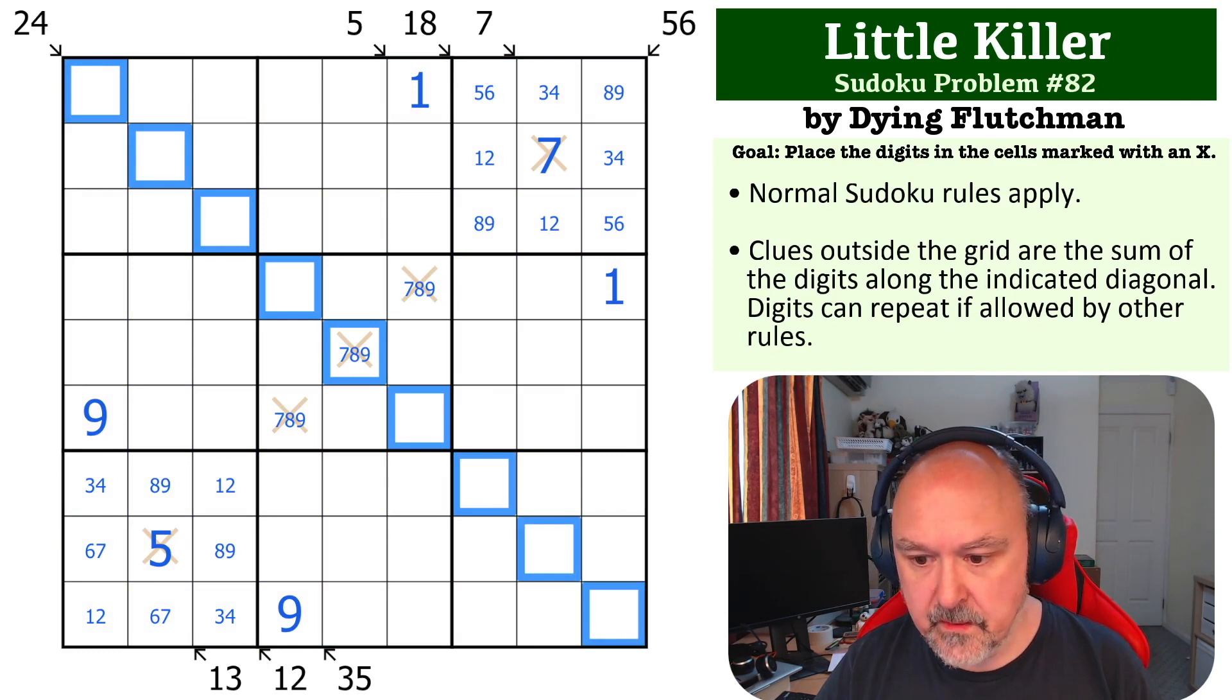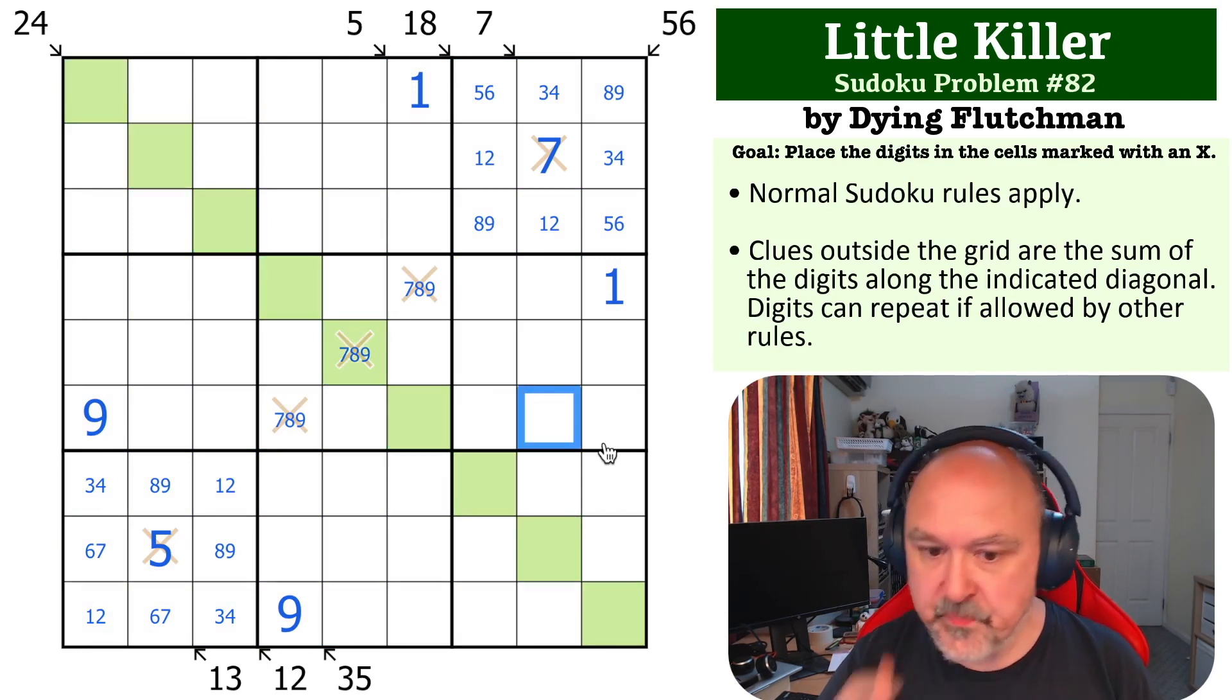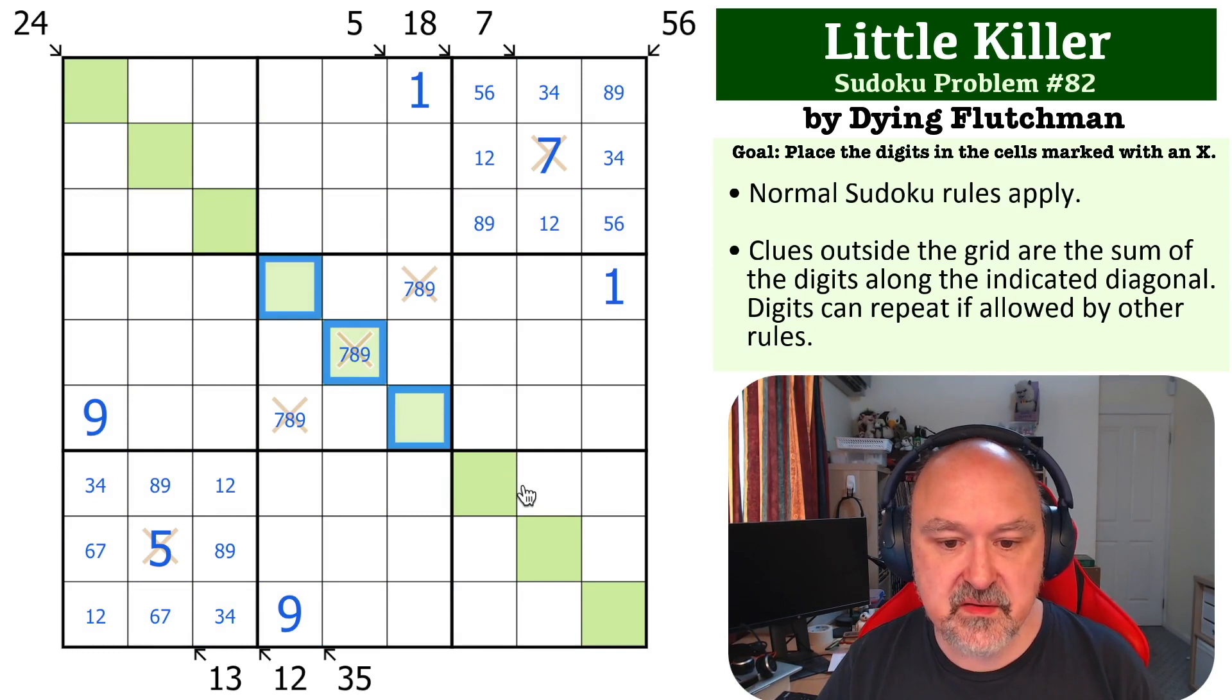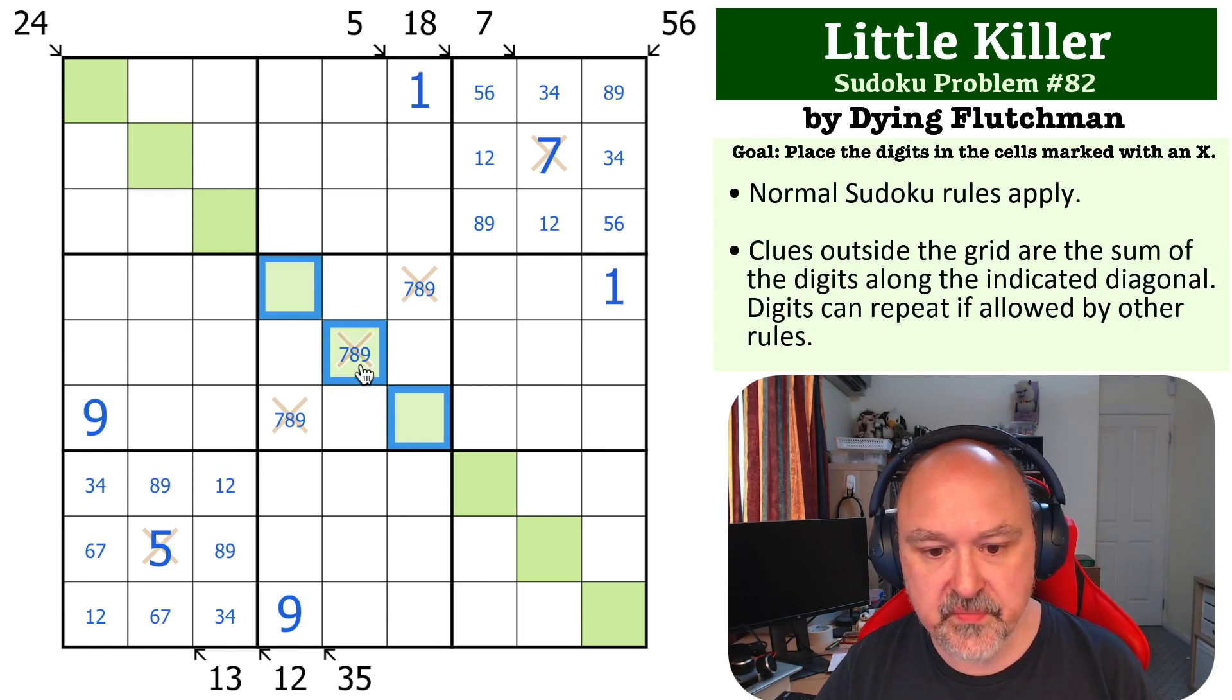This 24 now comes into play because on this 24, what is the absolute minimum we can put in here? 24 is quite a low number for an entire diagonal. Well, the minimum we can put in here you may turn around and think it's actually 10.